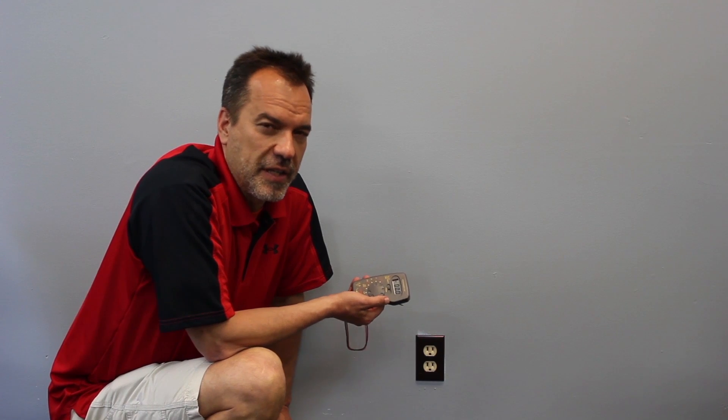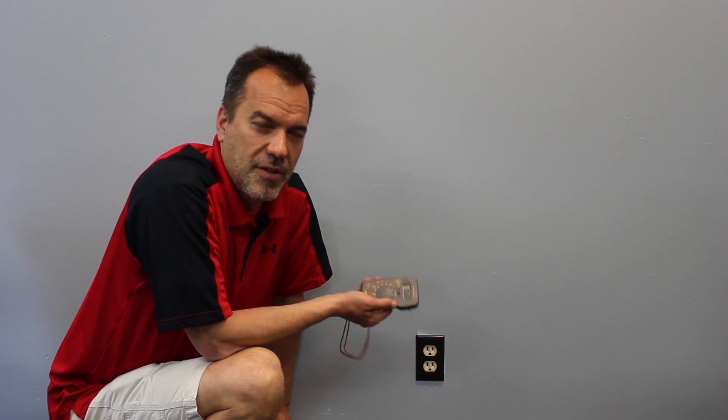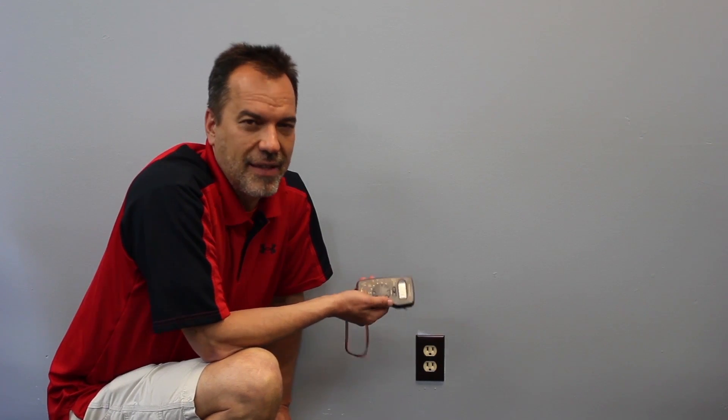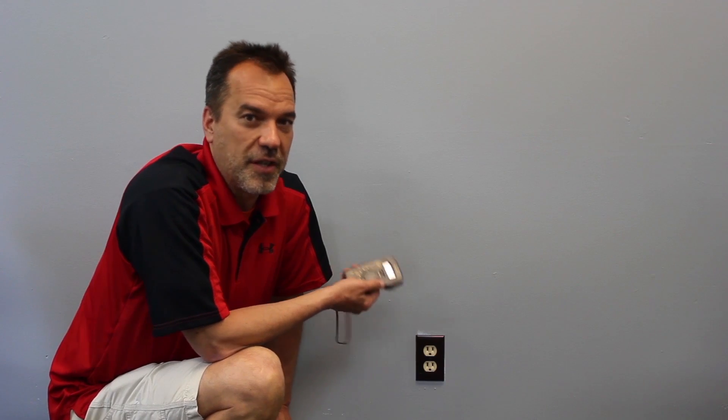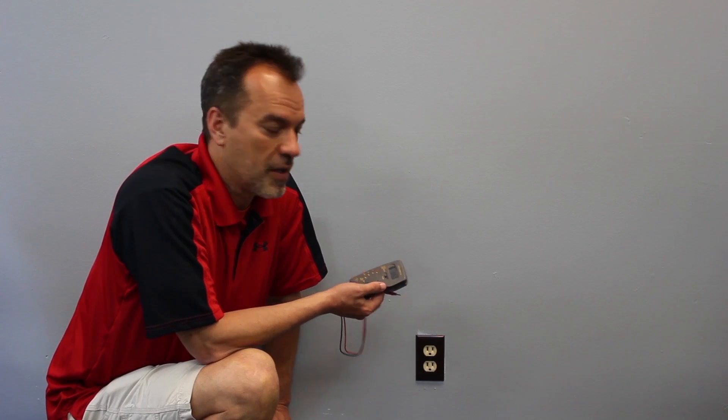The first thing you want to do when you're diagnosing or troubleshooting an irrigation electrical system is make sure that the power is going into the appliance, in this case the clock. My dad was an electrician his whole life and the first thing he always looked at is, is the thing that's not working getting the power? If you're not getting the power, it's not going to work.